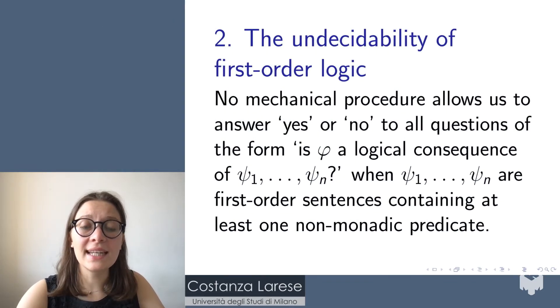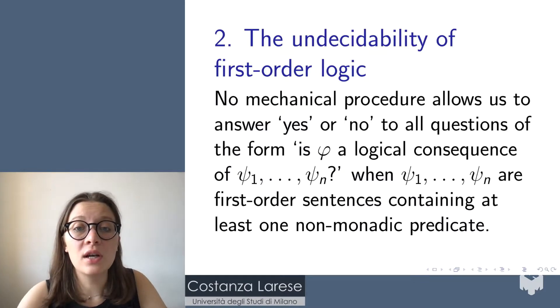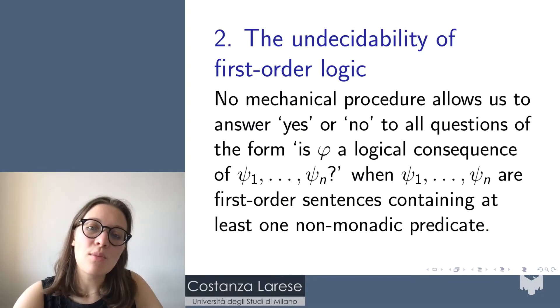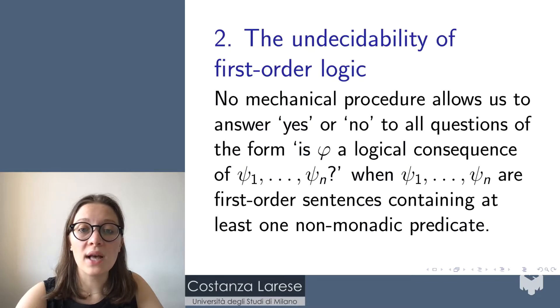Moreover, in 1935-1936, we learned, as a result of independent investigation of Turing and Church, that the logic of quantification, that is first-order logic, is undecidable. And this means that there is no mechanical procedure that allows us to answer yes or no to all questions of the form is phi a logical consequence of psi 1 through psi n, when psi 1 through psi n are sentences of a fixed quantificational language containing at least one non-monadic predicate, such as, for example, a binary relation.